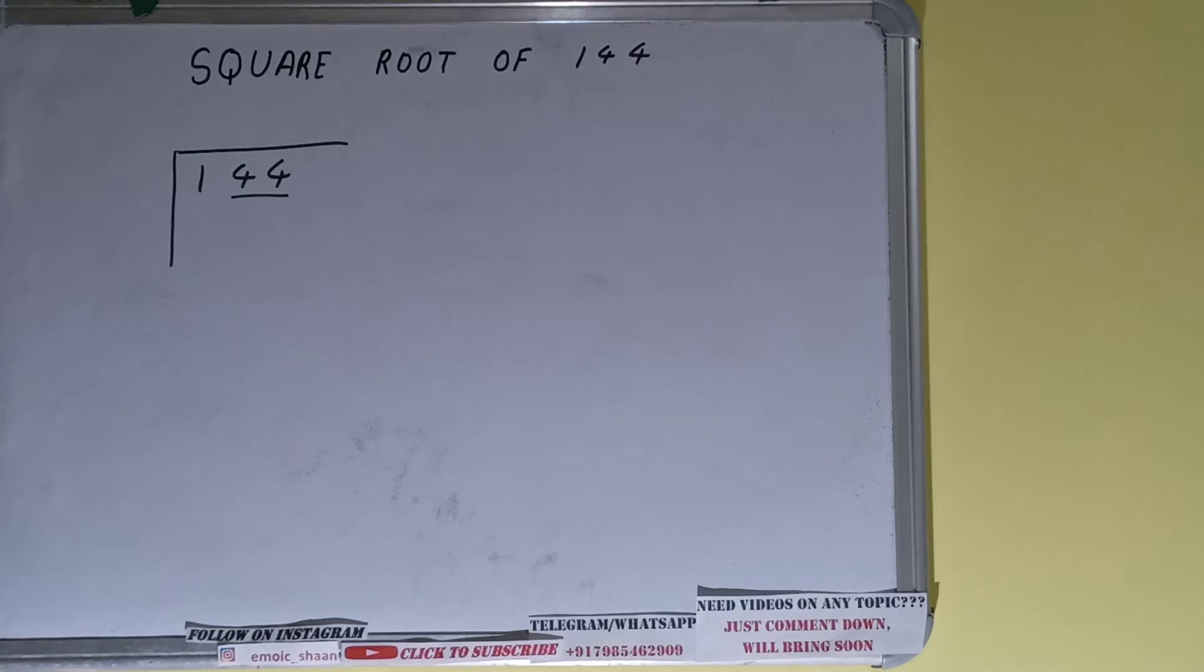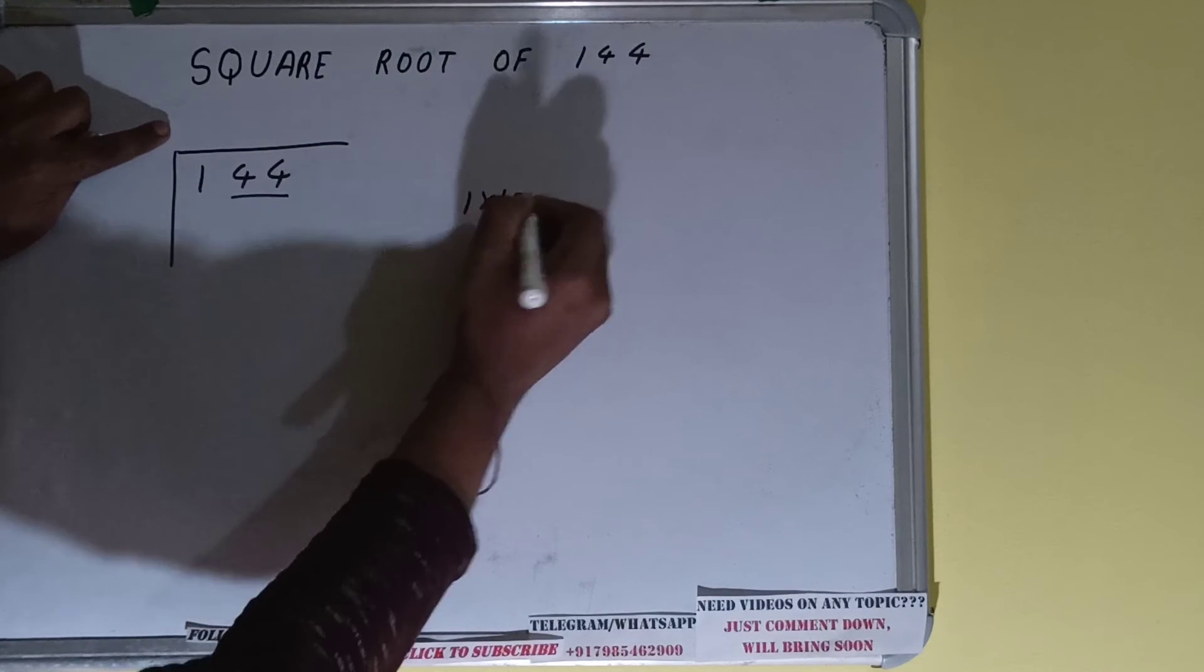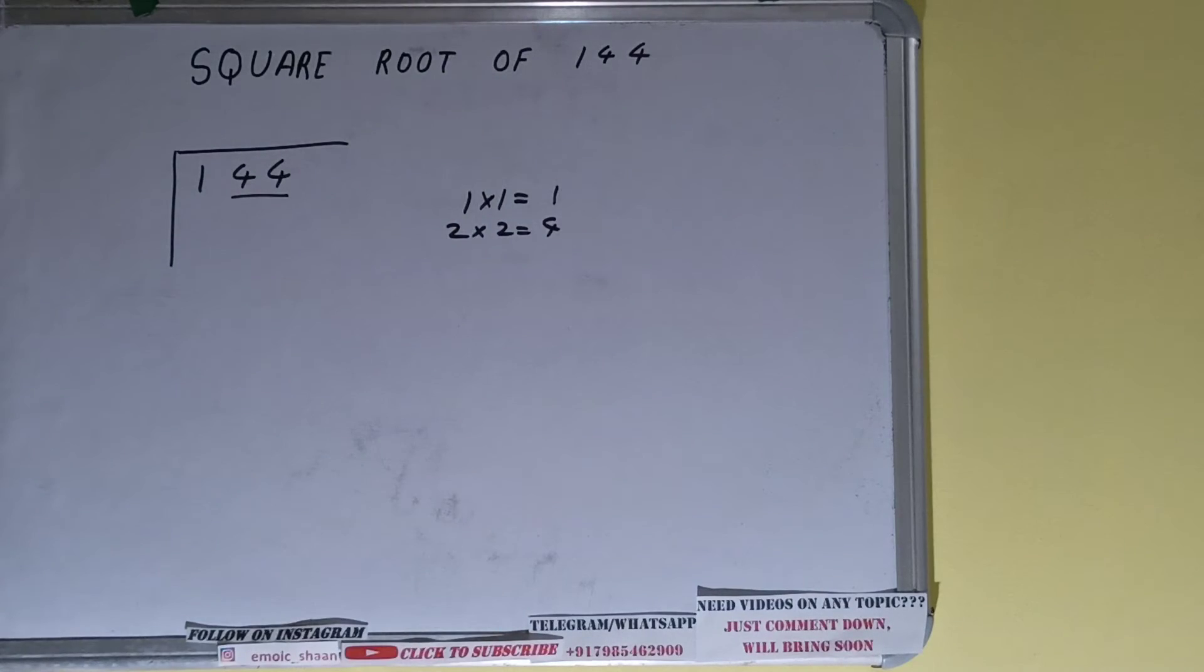The rule is whatever number we place here, we have to place here also. So if we place one here, we have to place one here also—it will give one. If we place two here, we have to place two here—it will give four. We cannot go with two because four is greater than one, so we have to go with one.